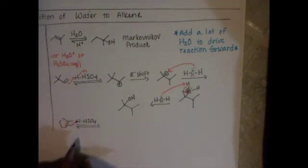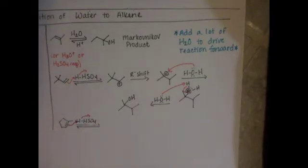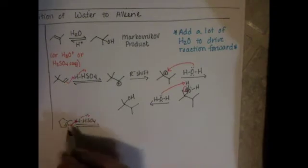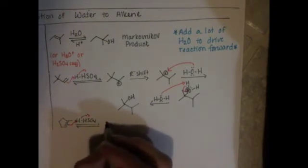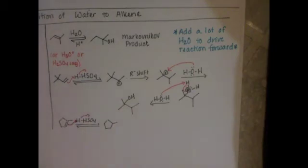The hydrogen that's attacked by the pi cloud of electrons is added to the alkene in the position that produces the most stable carbocation.